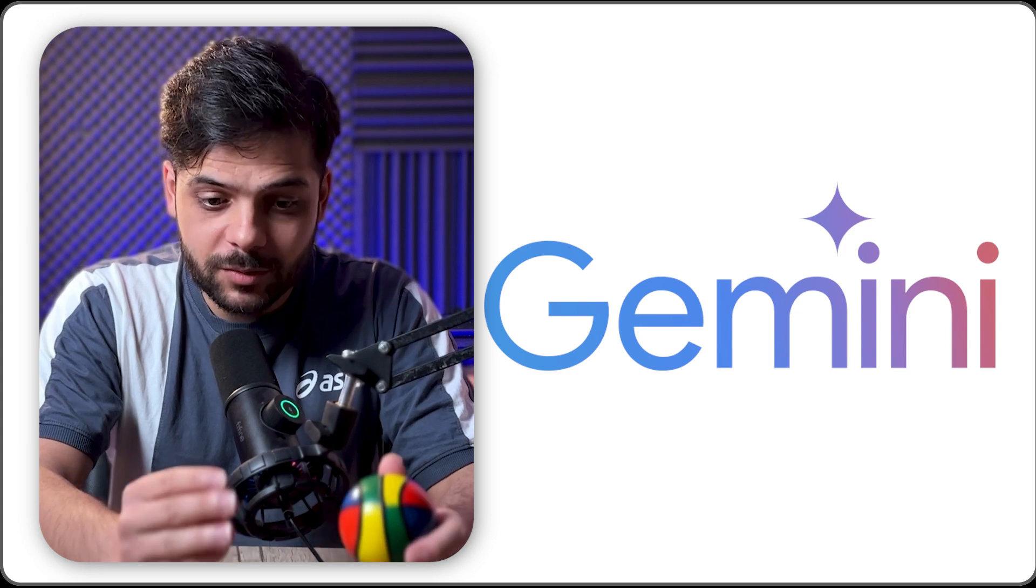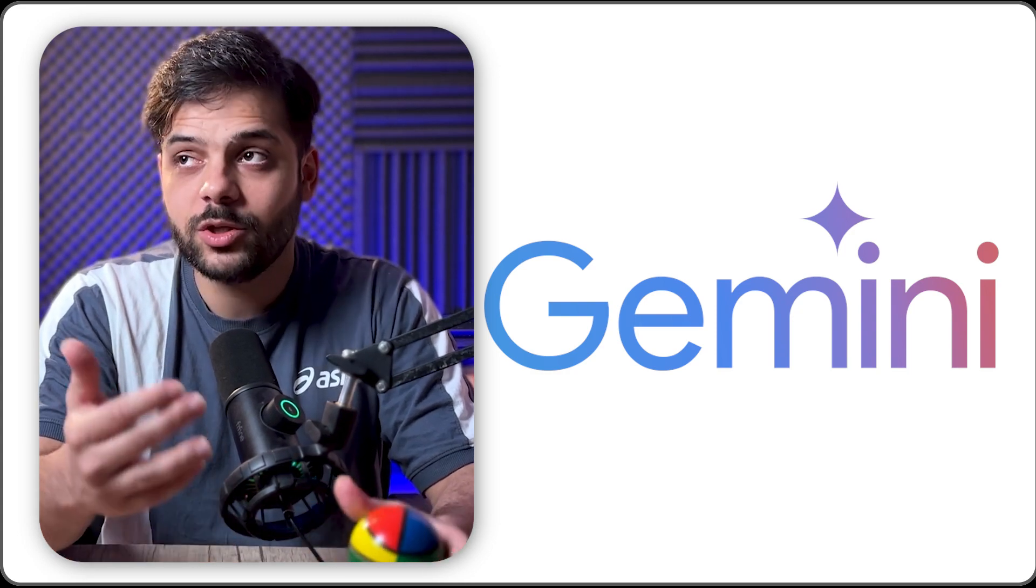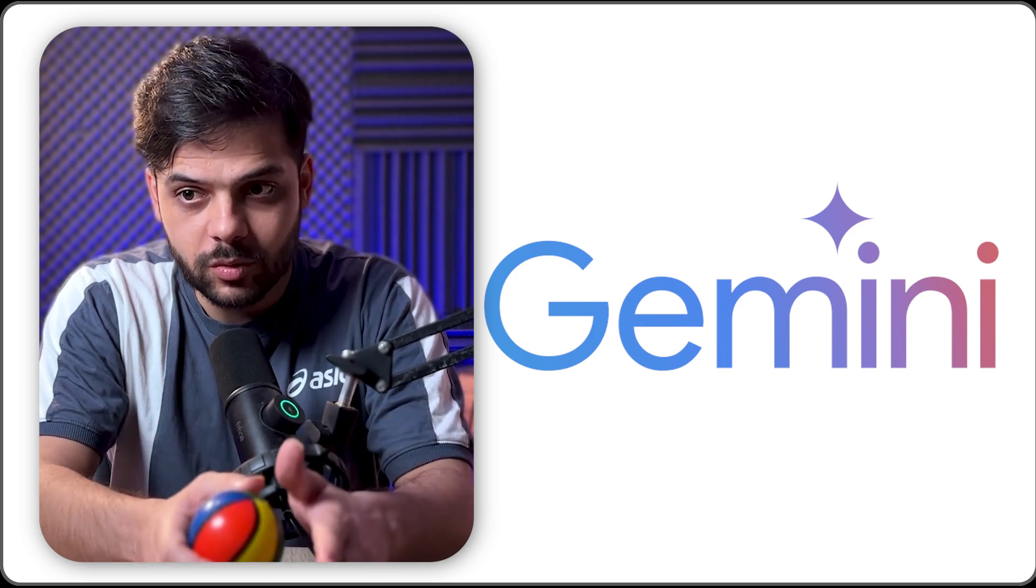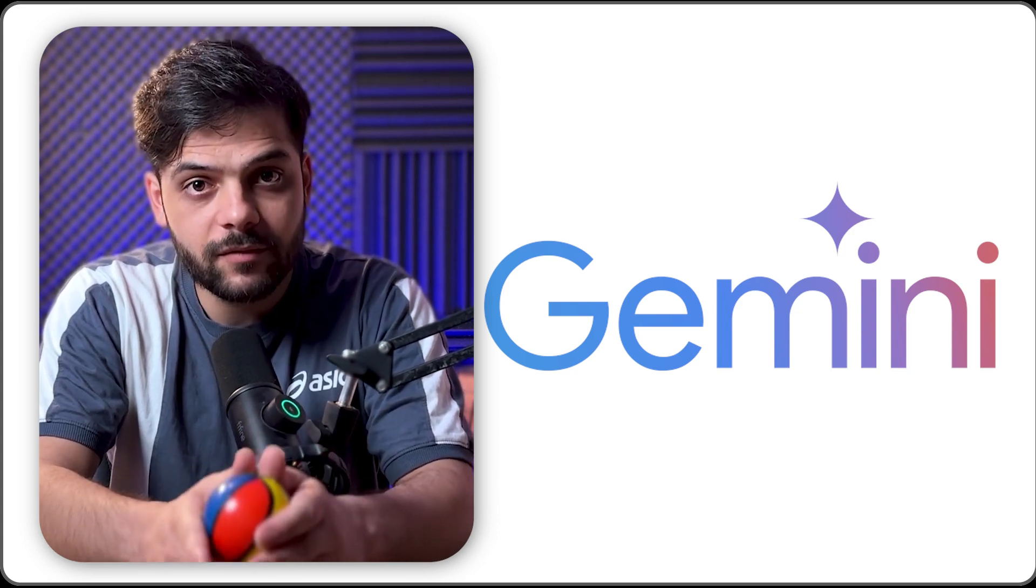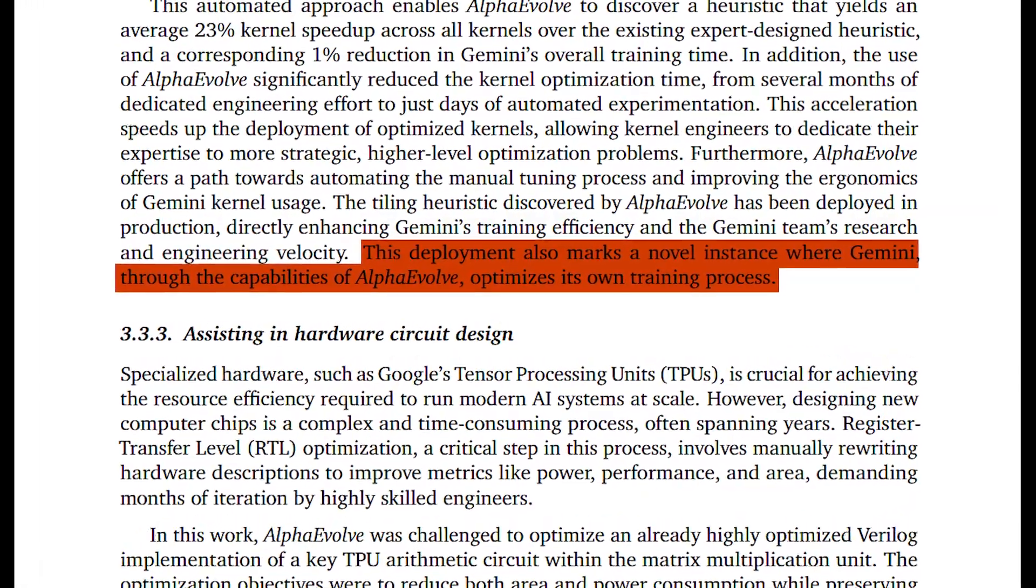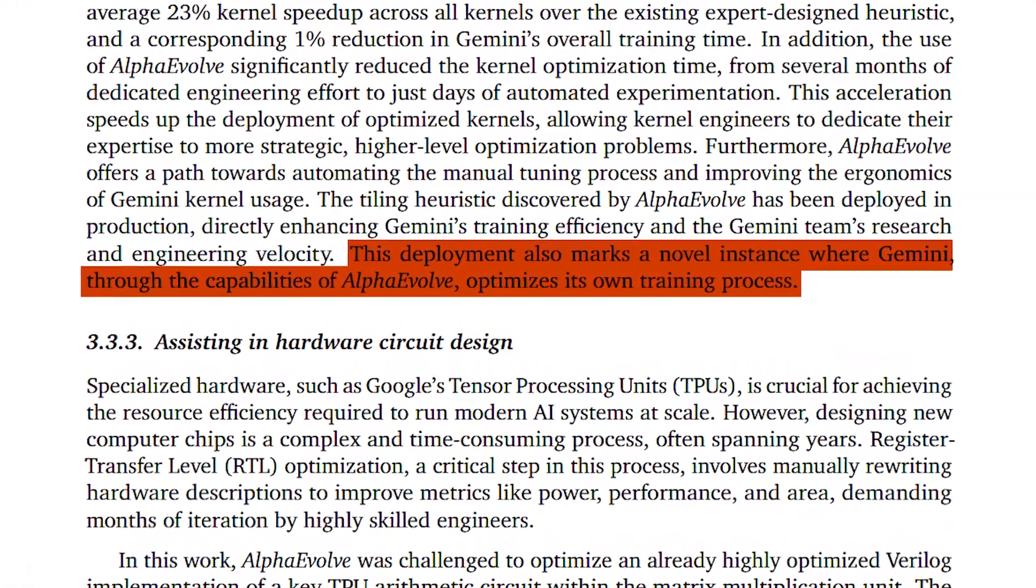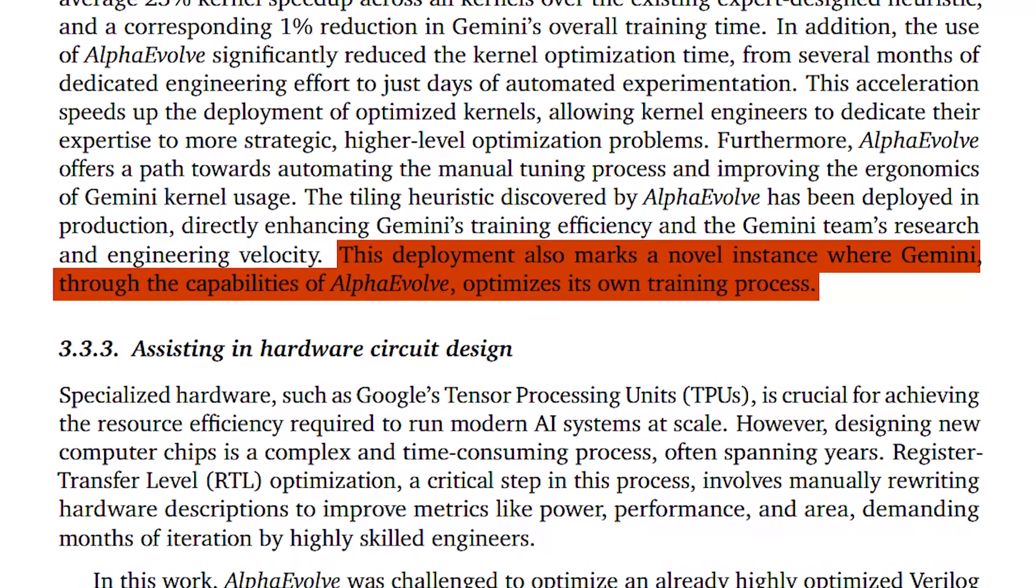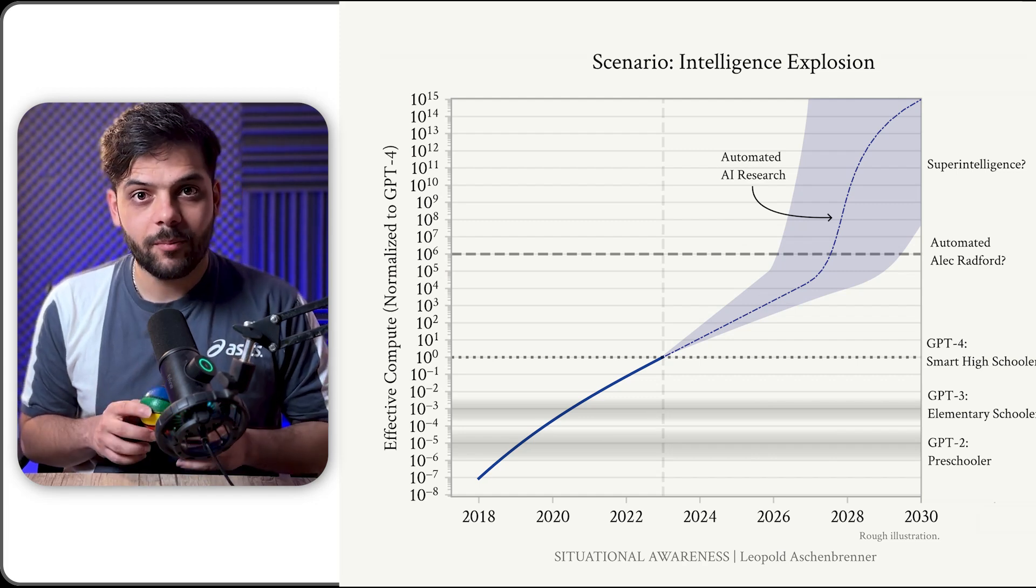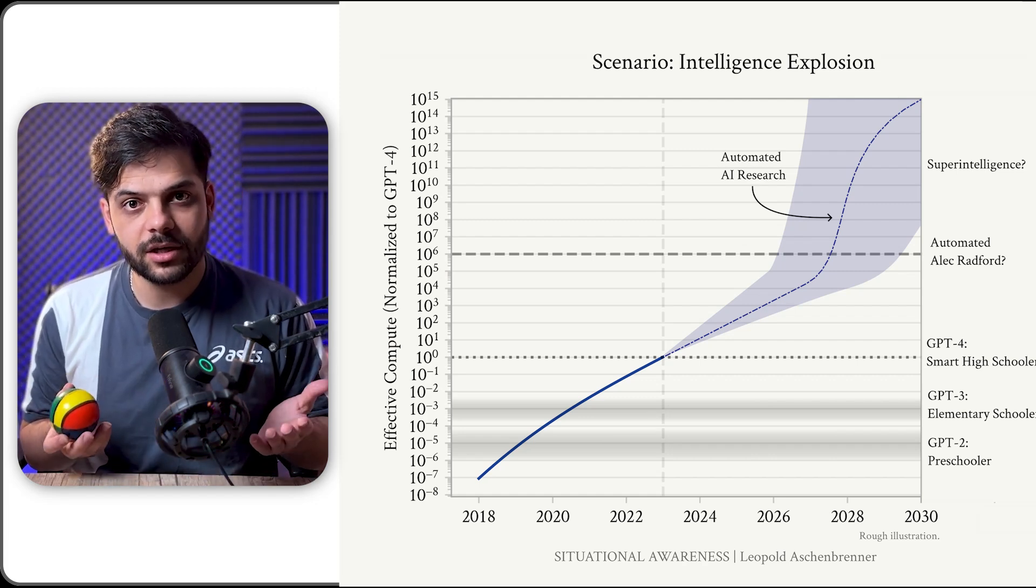AlphaEvolve was also able to improve part of Gemini training by 20%, which resulted in 1% overall savings in compute and shrink months of engineering to days. This deployment marks a novel instance where Gemini, through the capabilities of AlphaEvolve, optimizes its own training process. We might have had different ideas of intelligence explosion, but this already is a virtuous cycle.